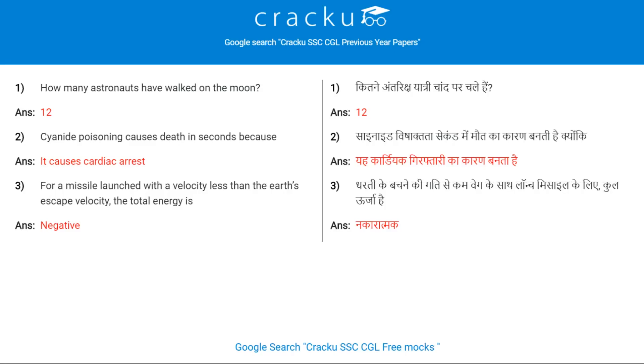Today's first question: How many astronauts have walked on the moon? 12.